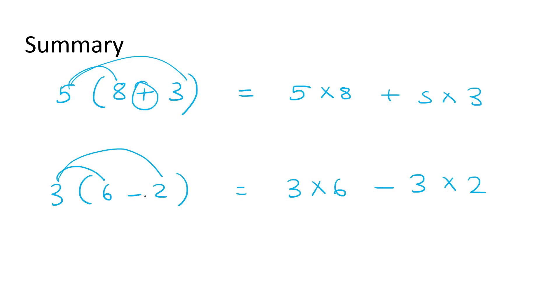So, in this lesson, we looked at the distributive property. And what we identified was that, for example, you have 5 multiplied by 8 plus 3. Well, that is the same as 5 multiply by 8, and then, plus 5 multiply 3. Another example would be 3, 6 minus 2. That is the same as 3 multiply 6, and then, minus 3 multiply 2. So, it works with plus and minus.